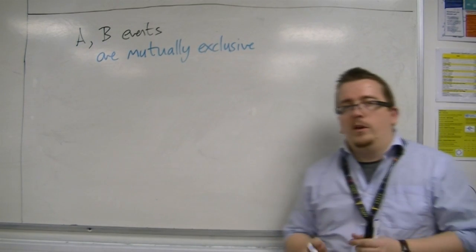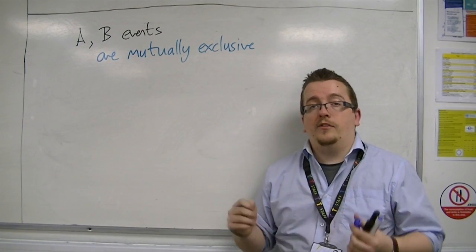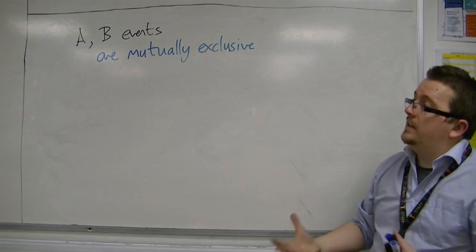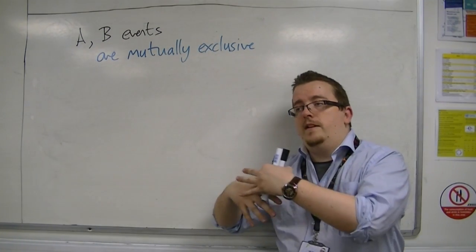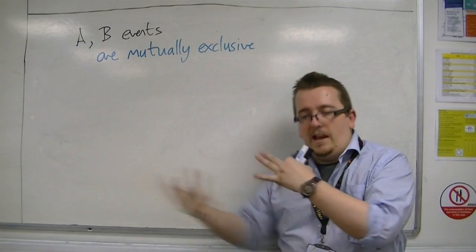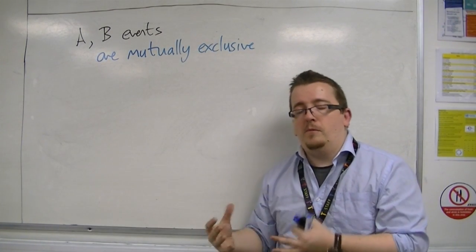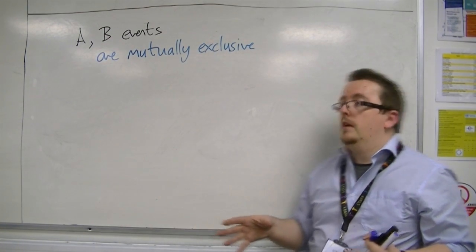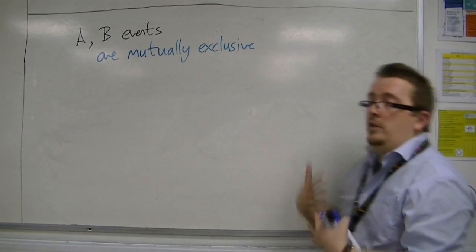For example, if you were looking at flipping a single coin and A was the probability of getting heads and B was the probability of getting tails, then they cannot happen both at the same time. I cannot get a heads and a tails with one flip of a coin. So, they would be seen as mutually exclusive.